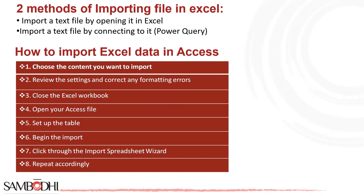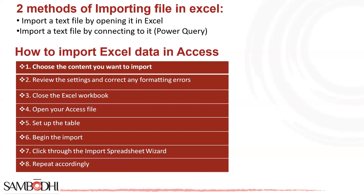Click through the Import Spreadsheet Wizard. First, find the worksheet you are importing and indicate if you are importing the whole worksheet or a named range. Tell the wizard if your table has headings. The next steps only apply to new tables — if you are adding data to a table that already exists, move to step six. Ensure that the name and data type are correct for each field, and review the other settings to make sure they align with your source data. Step eight: repeat accordingly — follow these steps again if you plan to import multiple data ranges or worksheets. Remember to adjust settings accordingly to minimize errors, and if there are formatting changes between each worksheet, manually correct the names and data types to match your source data.